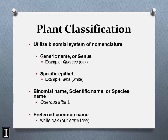With plant classification we use the binomial system — you have a genus and a species, or specific epithet. For example, the oak genus is Quercus, and the state tree of Illinois is Quercus alba — alba meaning white. The genus name is always capitalized and the specific epithet is not, but both are always italicized. Together they form the full species name.